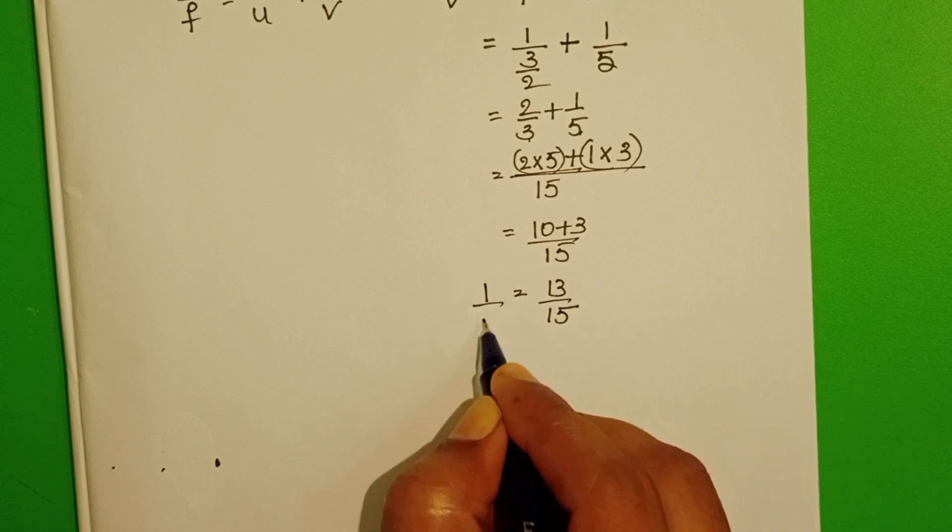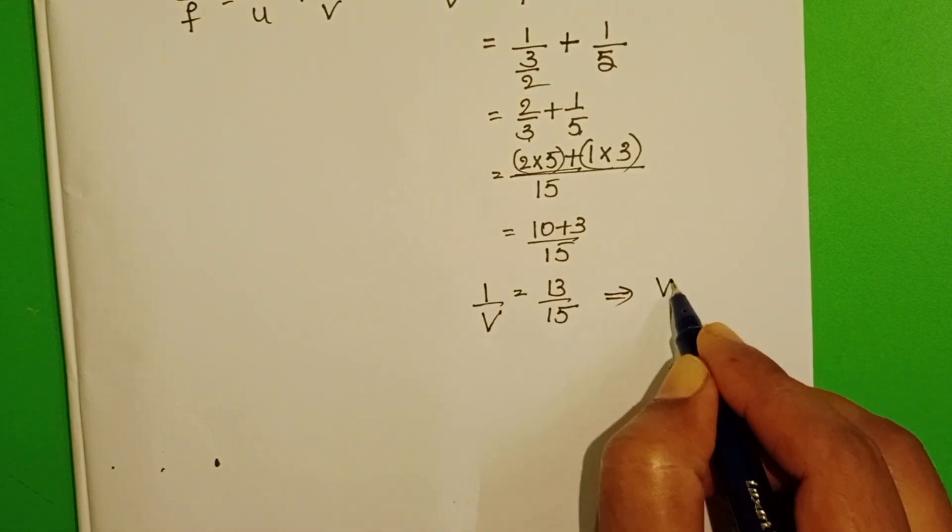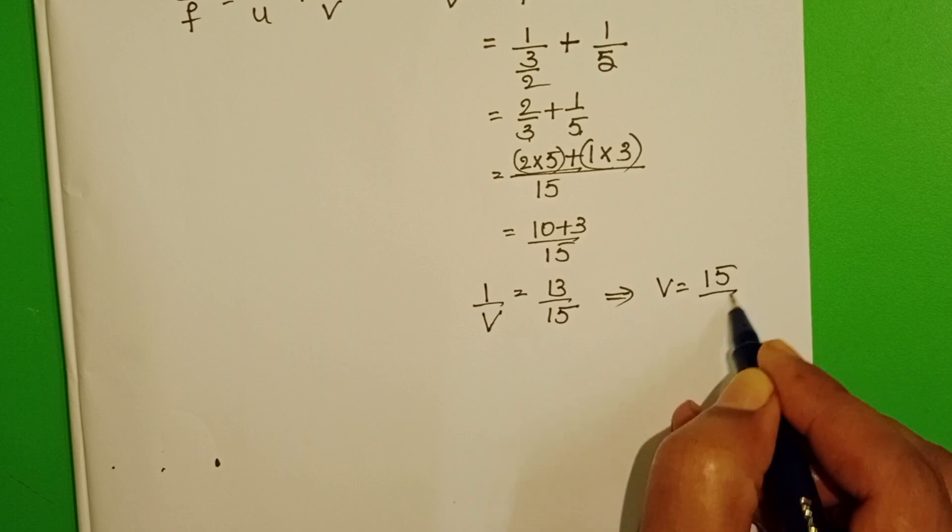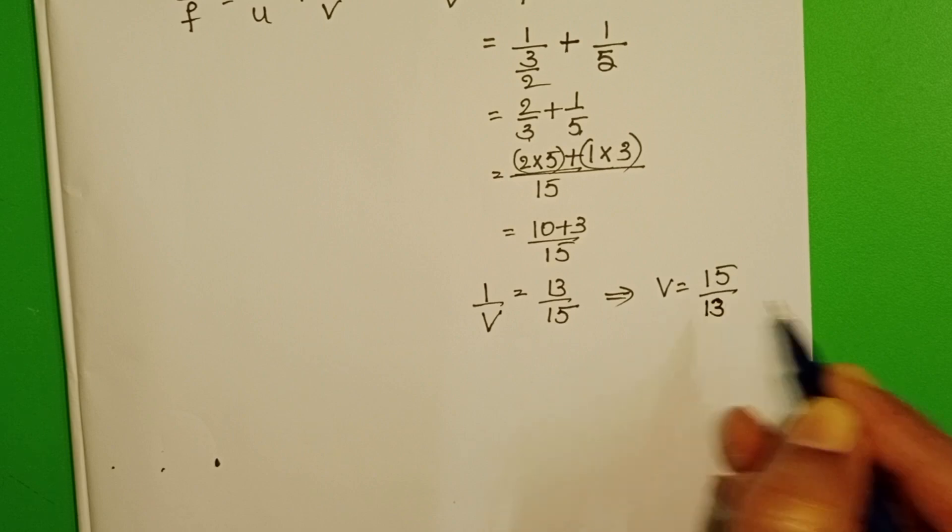This is 1 by V. Therefore, image distance equals 15 by 13 meters.